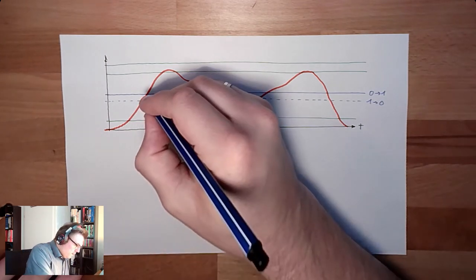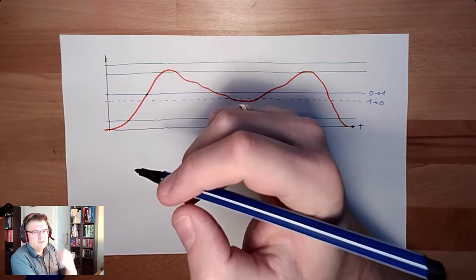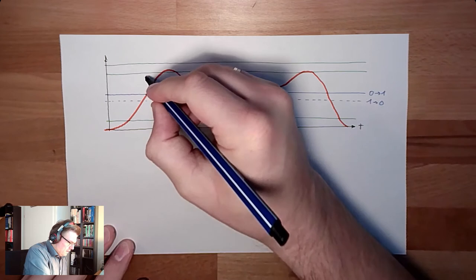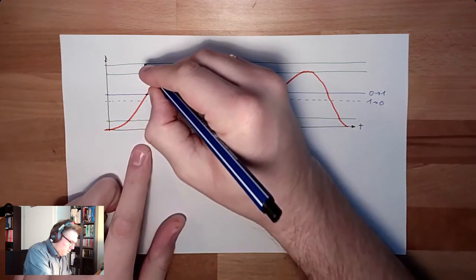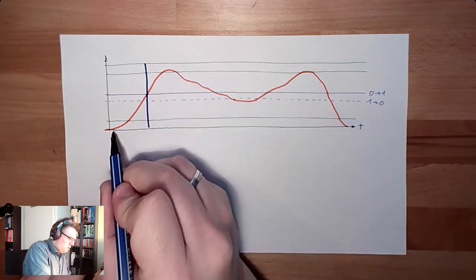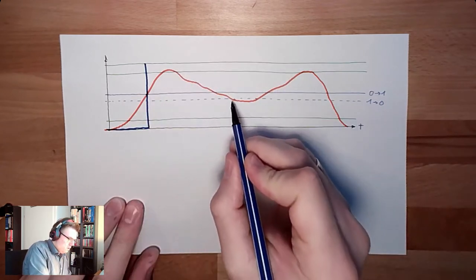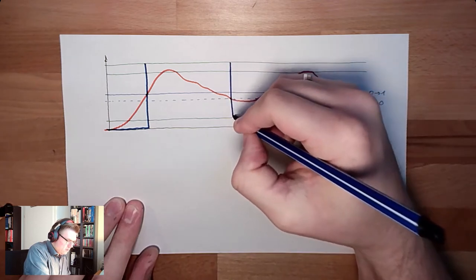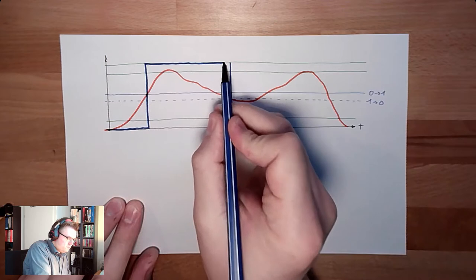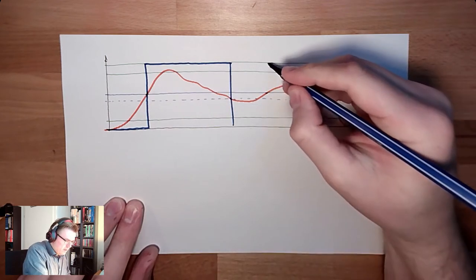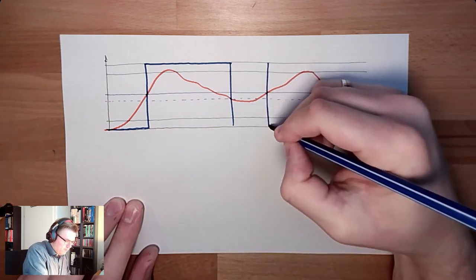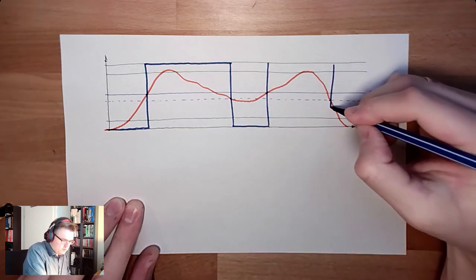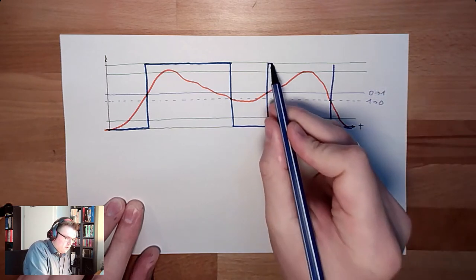Starting from here, the interpretation of the input - that's the correct word. Starting from here, here's the trigger level. We will interpret this input level as one up to here, where we are below the trigger level for going down to zero. Here we will be again above, and here we will switch back to zero. This is how this looks like.